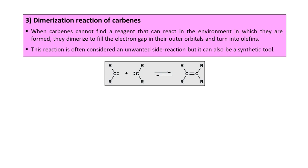The next reaction in today's video is the dimerization reaction of carbene. This process occurs when carbene molecules are not finding any reagent with which they can react — no other substrate is available in the environment. So what they do is dimerize to fill this electron gap, because they are electron deficient and not finding any substrate, so they react with each other.